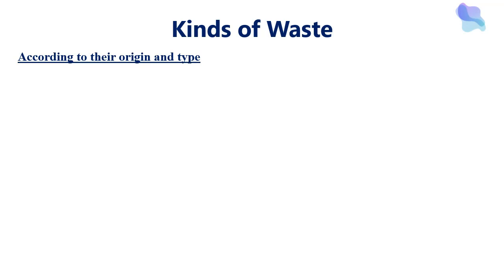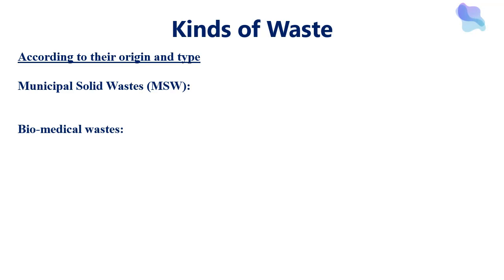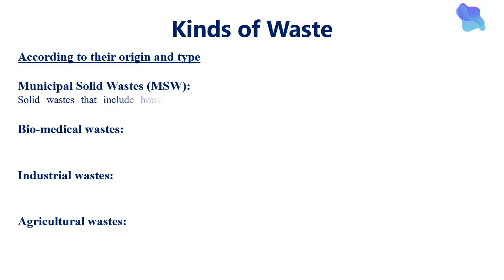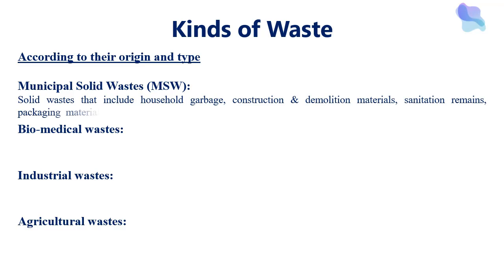According to their origin, waste types include: municipal solid waste (MSW), biomedical waste, industrial waste, and agricultural waste. Municipal solid waste includes household garbage, construction and demolition materials, sanitation remains, packaging materials, and trade refuse — all managed by a municipality within a specific region.